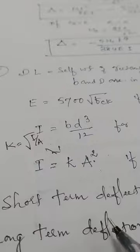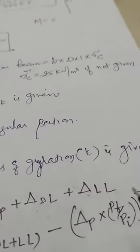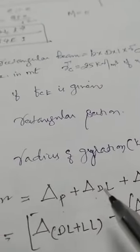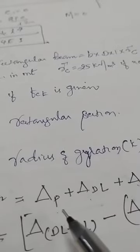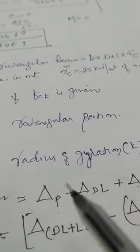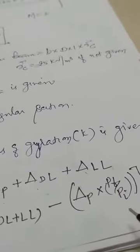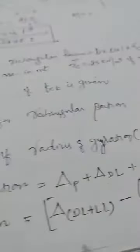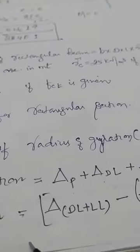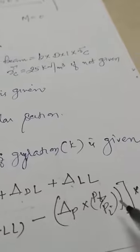For short-term deflection, calculate delta due to prestressing force, delta due to dead load, and delta due to live load. If deflection at transfer is given, calculate only due to P and dead load. For long-term deflection, consider the loss of prestress and creep coefficient using the Linz formula: δ = (δ_dead + δ_live − δ_prestress × pf/pi) × (1 + φ), where pf/pi is the loss ratio.